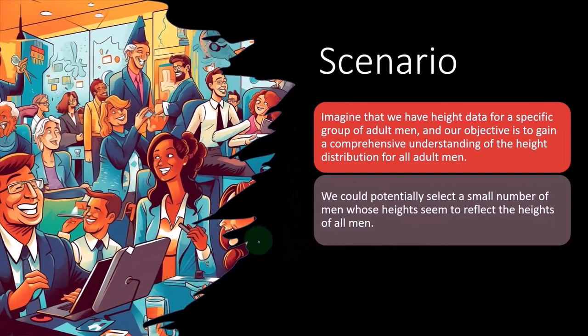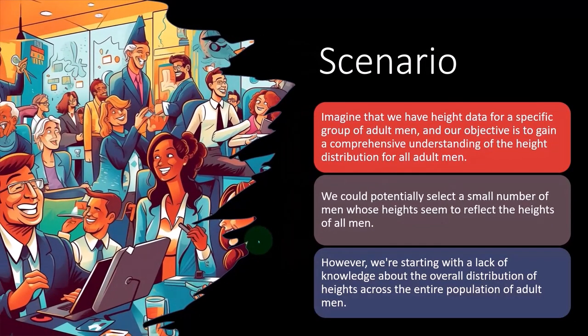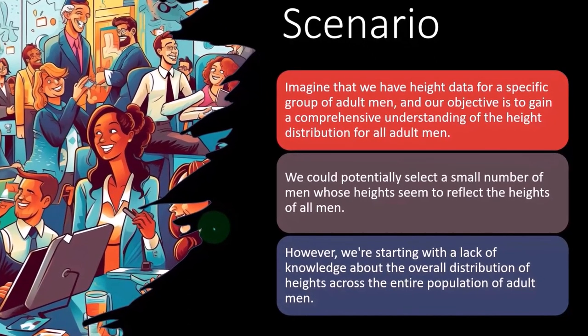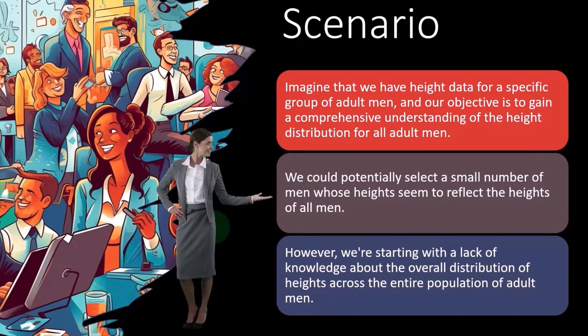However, we're starting with a lack of knowledge about the overall distribution of heights across the entire population. The problem is you're assuming that you know the answer to the problem that you're trying to solve. If we already knew the answer — the middle height — then picking a sample would be easy, but it would also be defeating the point because we would simply be picking a sample that ties out to the actual height.